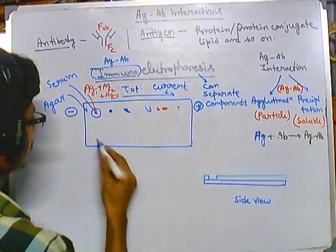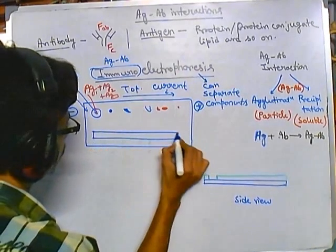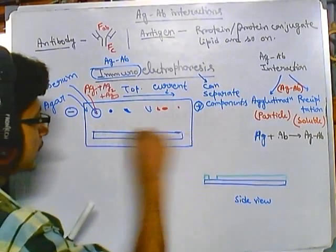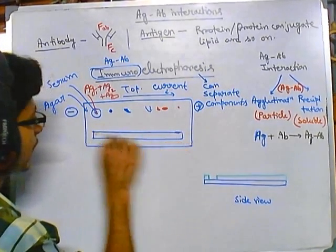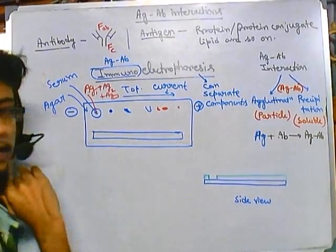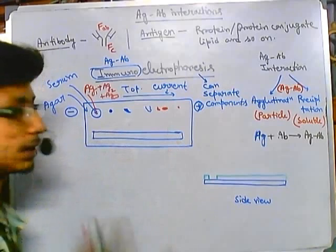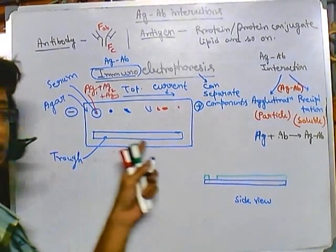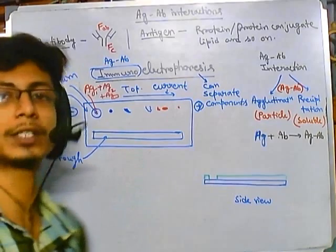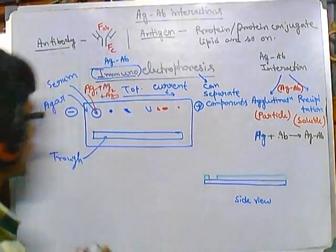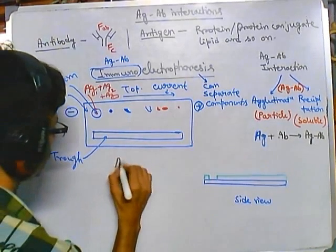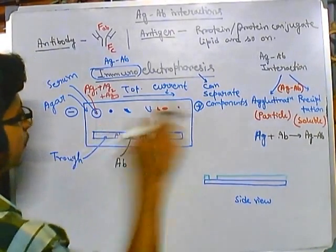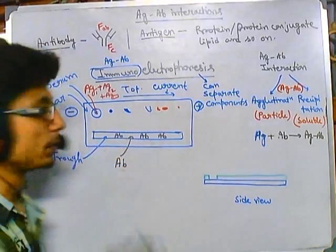After electrophoresis, we make a trough at a particular point. We slice out this section of agar from the glass slide — this region no longer has any agar — creating a groove called a trough. Onto this trough we load the antibody of our choice. So we have antibodies in the trough and the mixture of separated antigens in the agar.